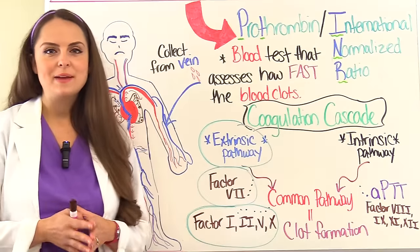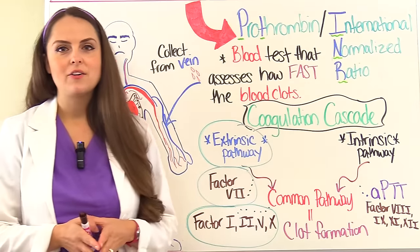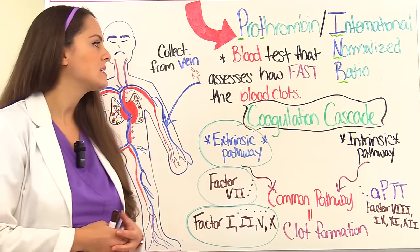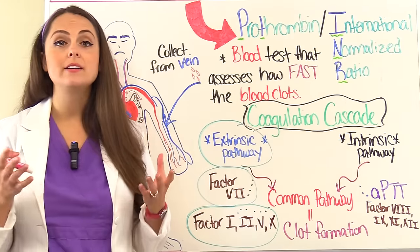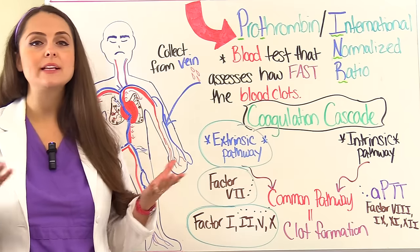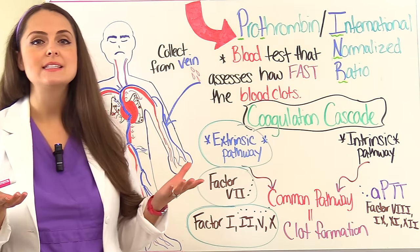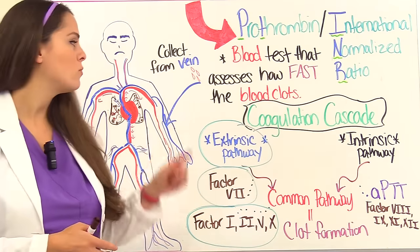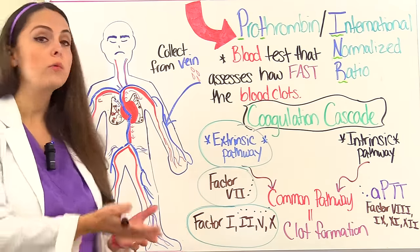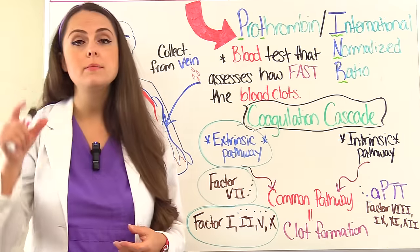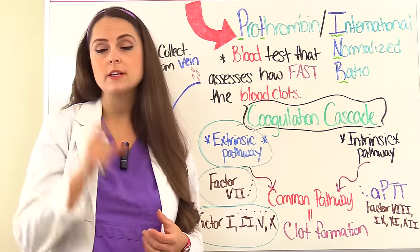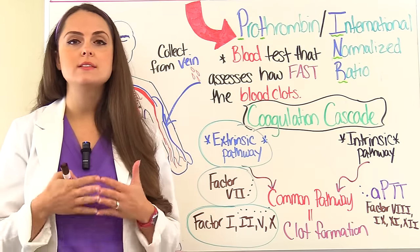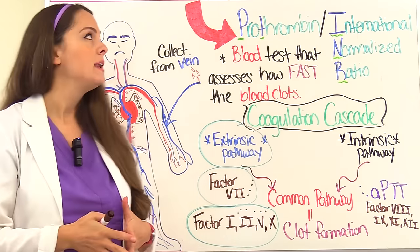What is a PT INR? This is a blood test that assesses how fast the blood clots. How we collect this test is that we stick a patient's vein with a needle, we remove some blood, put it in a specific tube, and we send it to a lab who will run this test.